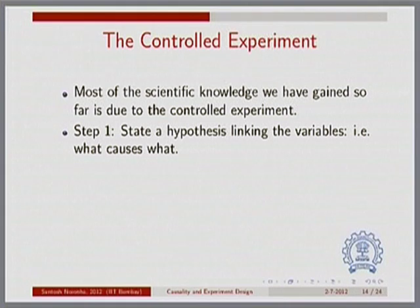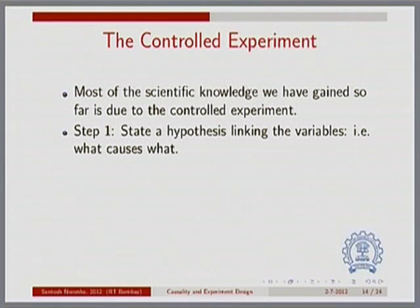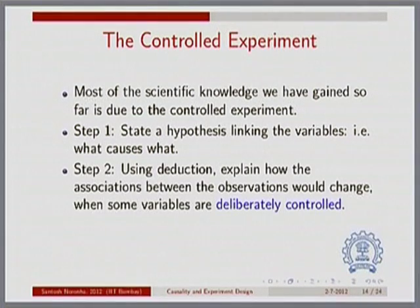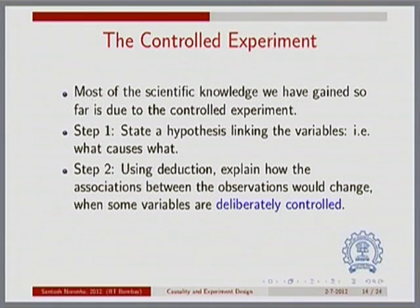In this experiment, what happens is that we first state a hypothesis — a statement about something we think is related to something else. In fact, we might even think one step further and say something causes something else. Smoking causes cancer — that could be a hypothesis. Once you make such a hypothesis, you then use deduction and try to explain what kinds of measurements you must make and what kinds of variables you must look into in terms of the relationship between them.